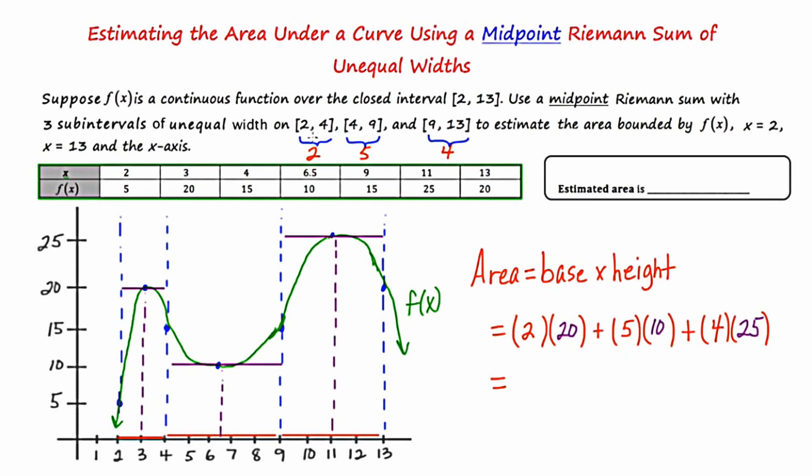So the width of each rectangle came from the intervals themselves. But the height came from looking at the midpoint of each of these intervals and projecting up to the corresponding point. So our first product is 40. Our second product is 50. And our third product is 100, giving us a total estimated area of 190. So the estimated area of the region under this green f of x from 2 to 13 using a midpoint Riemann sum of unequal width is 190.